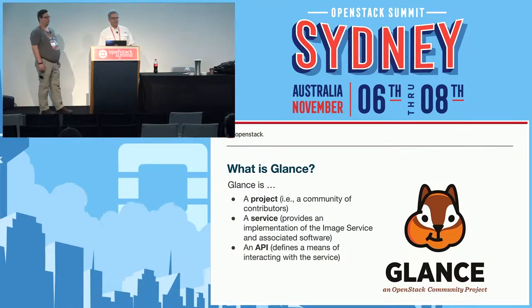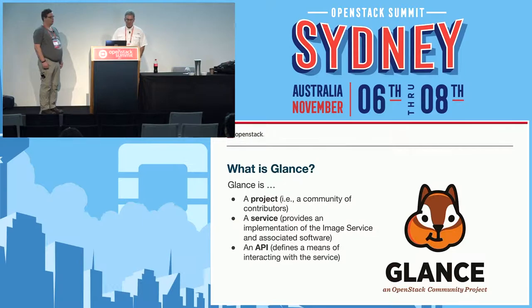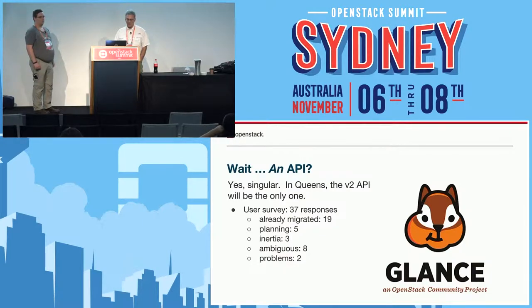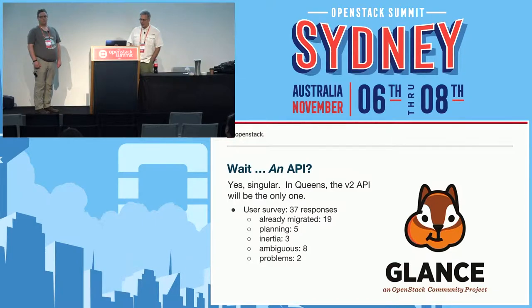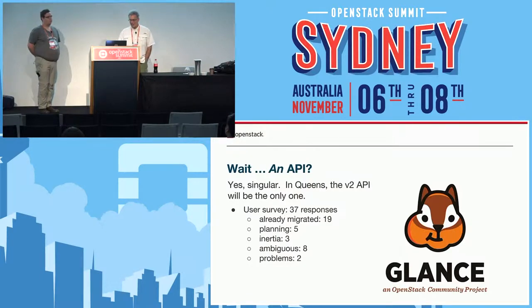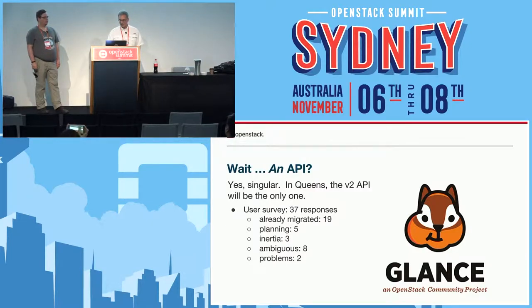Glance is a project — a community of contributors — it's a service providing an implementation of the image service, and it presents an API for interacting with the image service. In Queens, the V2 API will be the only one. The V1 was deprecated two cycles ago. I did a user survey with 37 responses — 19 had already migrated, five had planned, three hadn't done it yet due to inertia, and only two people saw potential problems. So the community is pretty much ready for V1 to go away.